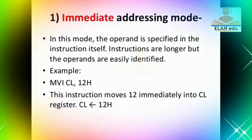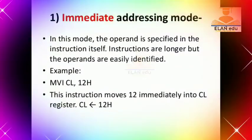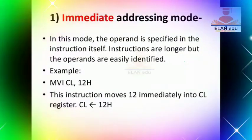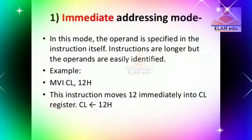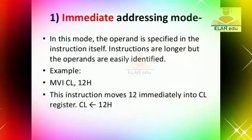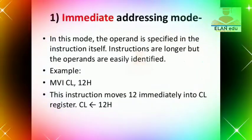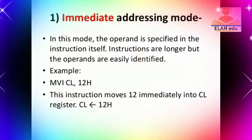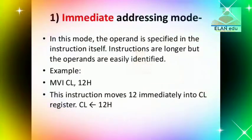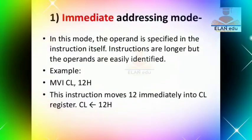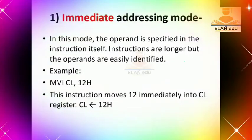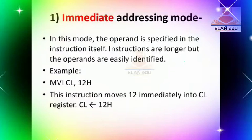For example: MVI CL, 12H. Here 12H is 1-byte data. CL is the lower-order byte of the C register, so 12H will be moved into that register.